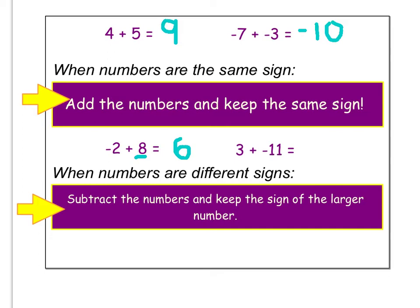With the next one, I have 3 plus negative 11 — opposite signs. I subtract the numbers: 11 minus 3, so I get 8. And then the larger number is a negative number, so my answer is going to be negative.